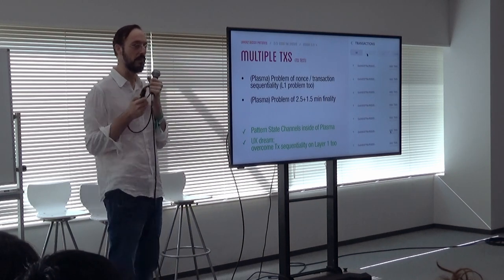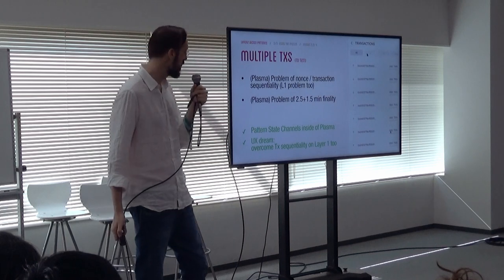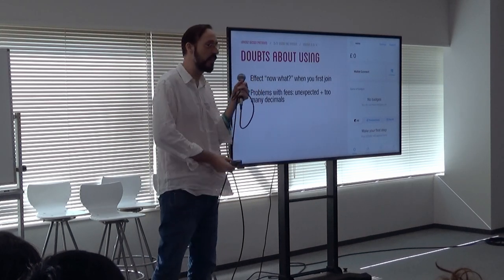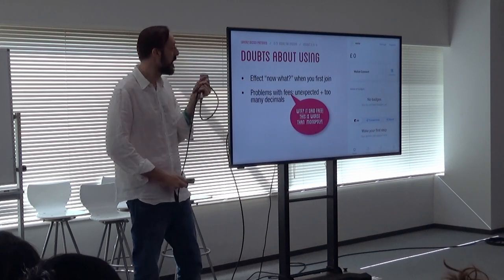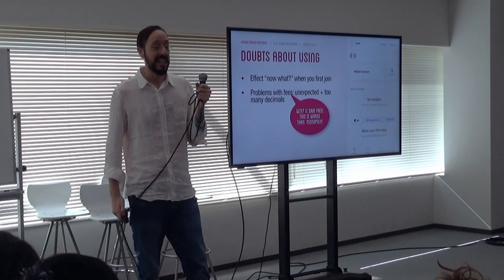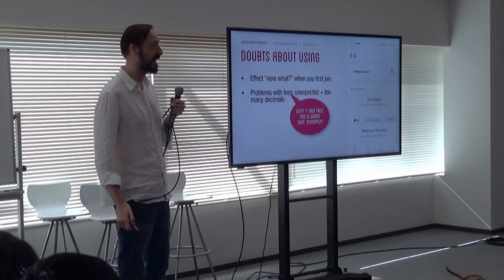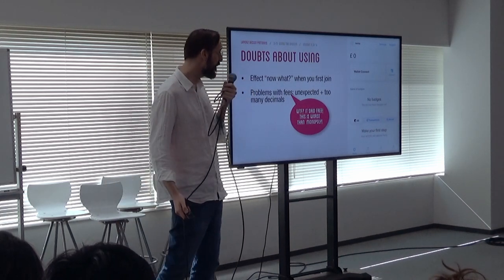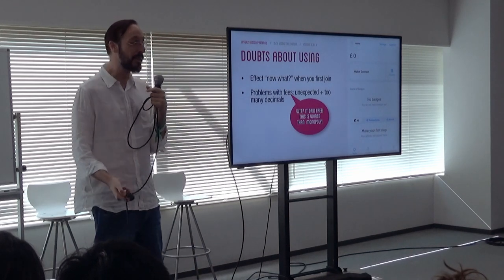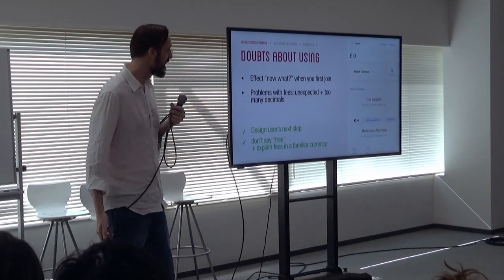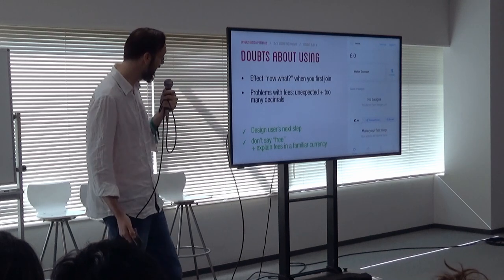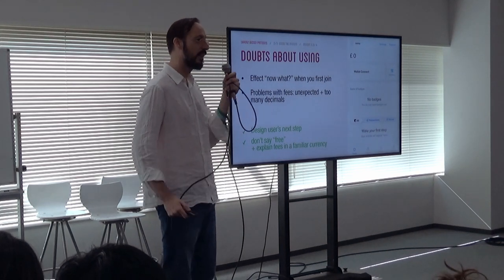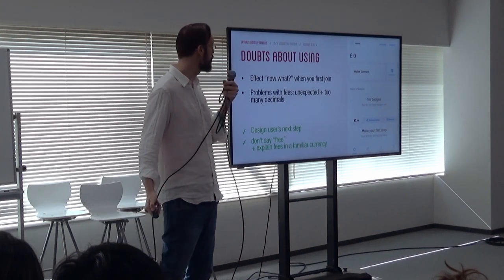They needed to wait until one transaction came back, and that has caused problems for many users in the past. And doubt about using: there's a generic problem where you've onboarded but then you don't offer the next thing — a user is left saying 'what do I do now?' Also, it's said to be free, but I continuously see different transaction fees and users don't understand what these fees are. This was an actual user comment: 'What the fuck? It said free. But it's worse than Monopoly. They are screwing me at every step.' So: design the user's next step — this is basic behavioral design. And don't say 'free,' and don't use 'layer 1' language.